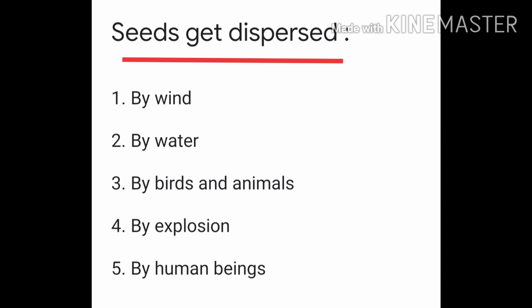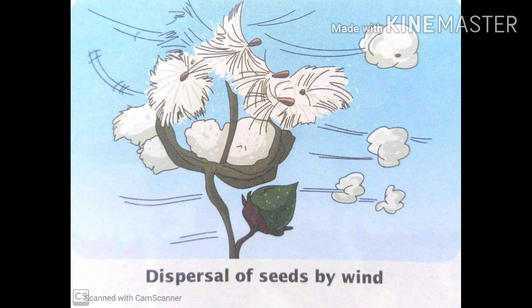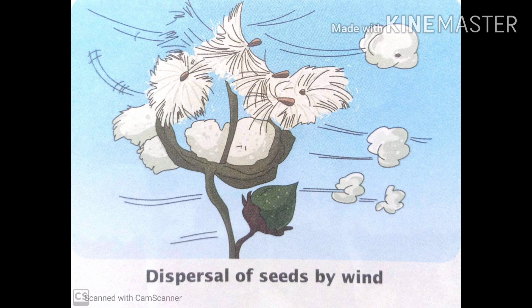Seeds get dispersed in many ways: one by wind, second by water, third by birds and animals, fourth by explosion, and fifth by humans. First, when the seeds get dispersed by wind, usually the seeds that are dispersed by wind are generally light and small such that they can be easily carried away by the wind. Example cotton seeds.